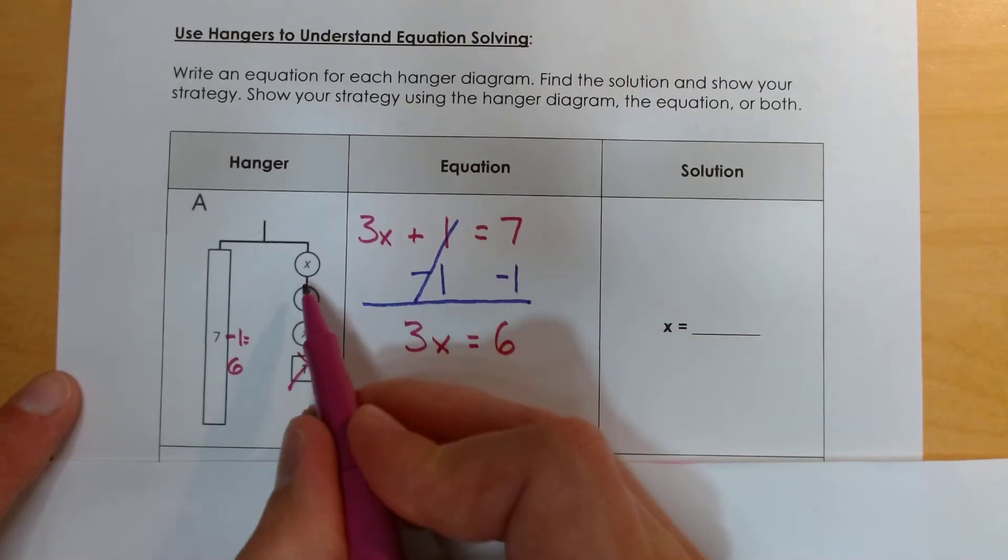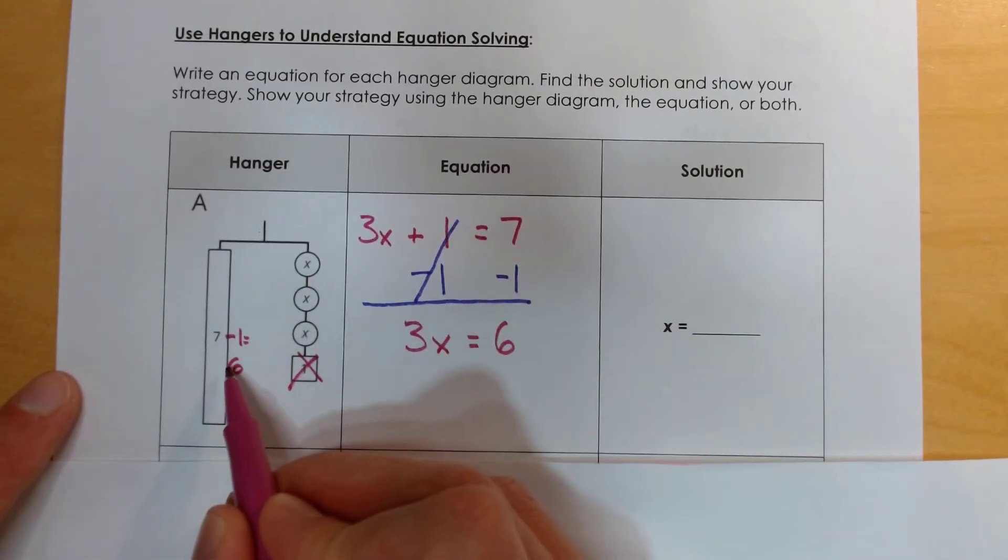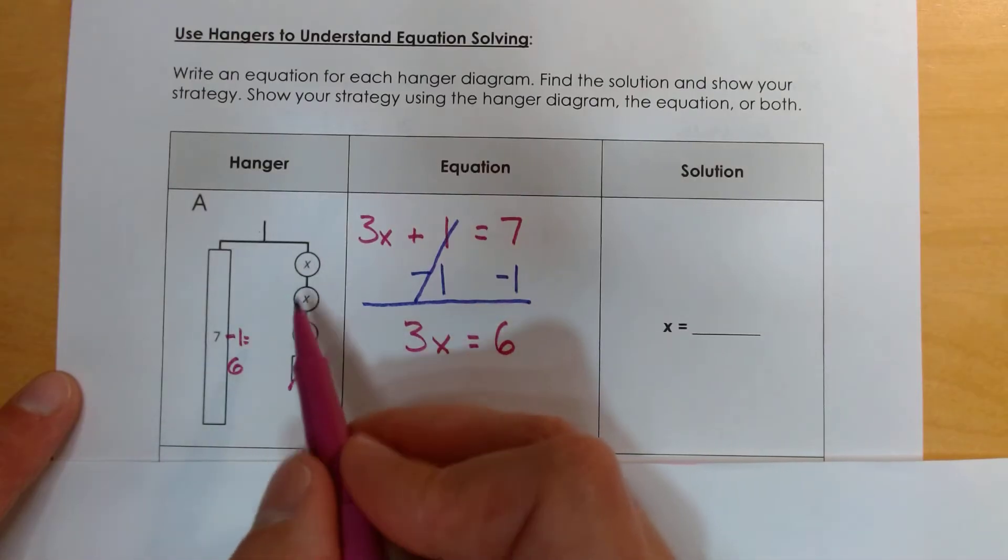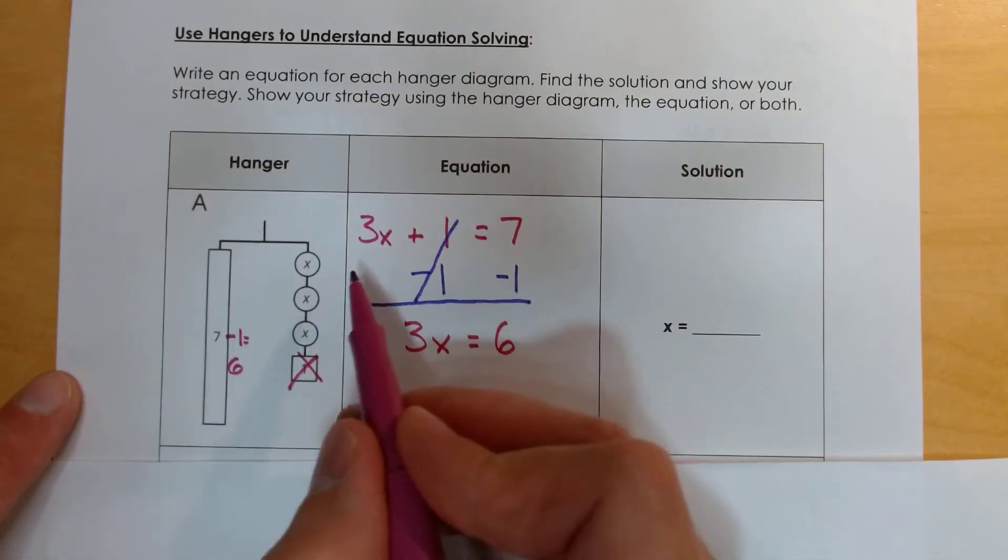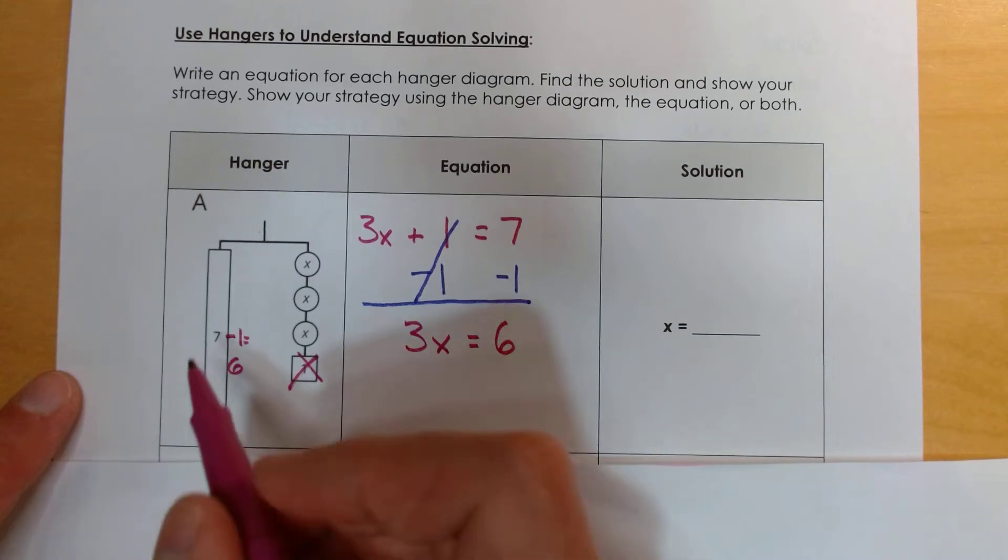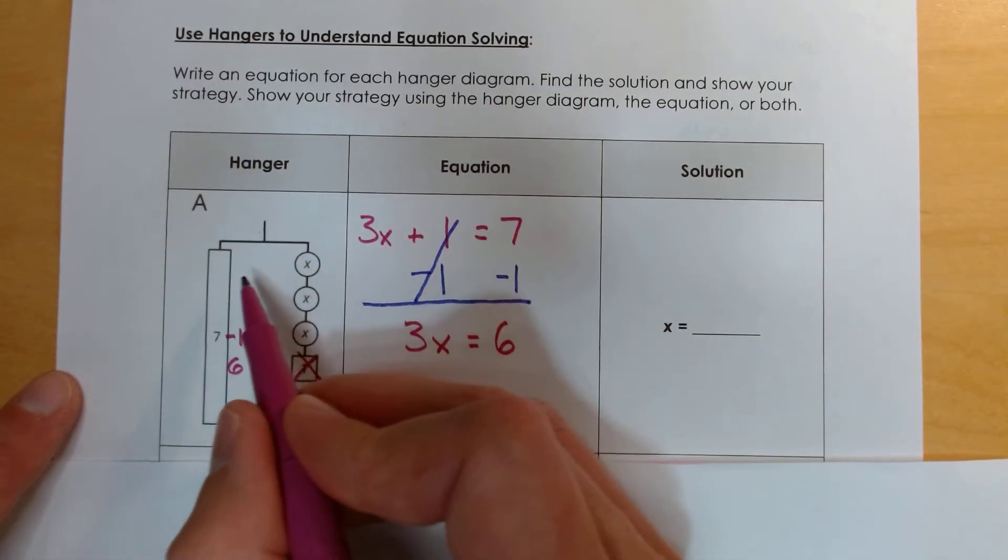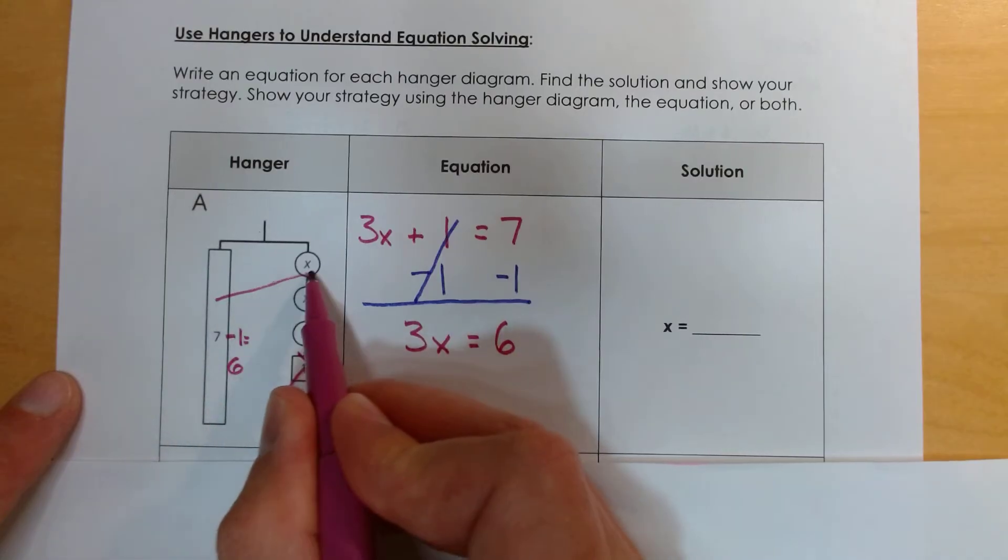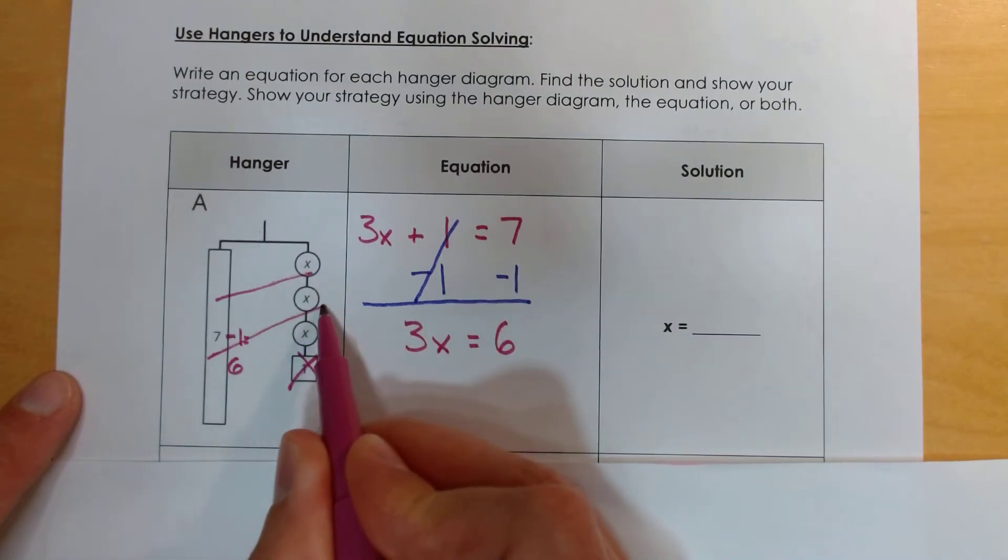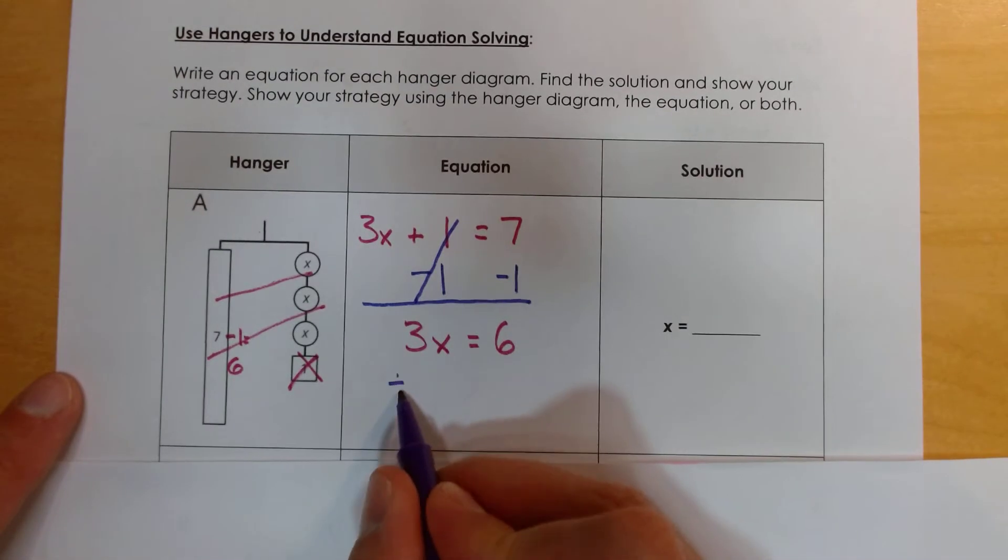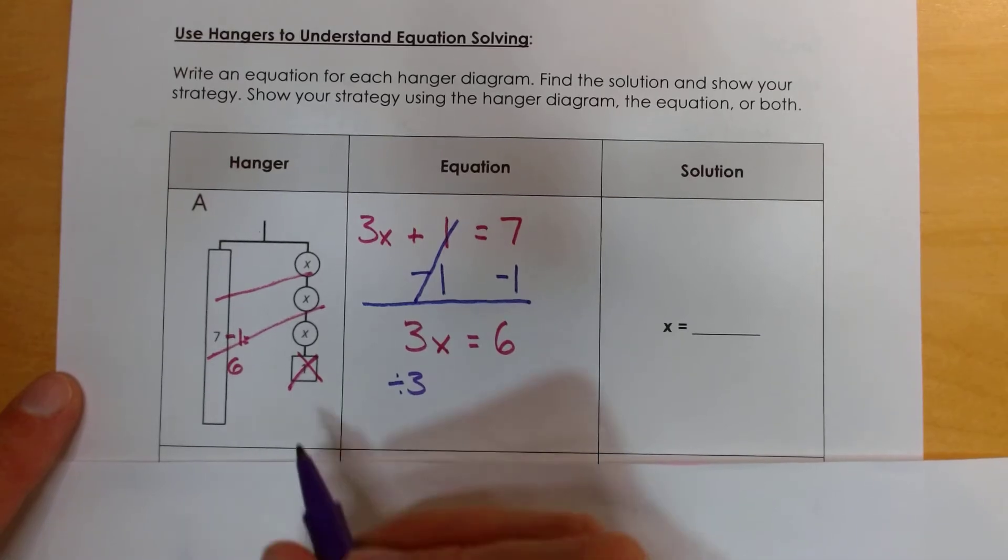3 x's equals 6. But what would 1x equal? So now what I need to do is I have to take these 3 x's and this bar of 6. I need to split it into 3 equal groups, because if I can figure out what 1 equal group, one of those groups is, I'll know what x is. So what I'm doing is I'm taking my x's and splitting them apart. So when we think of the word split, we think of division. So basically what I'm doing is dividing into 3 equal groups.